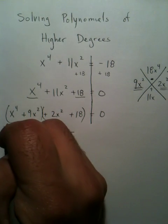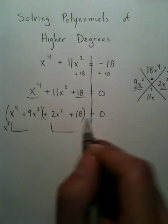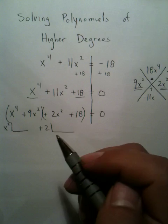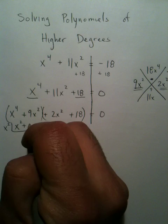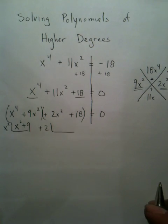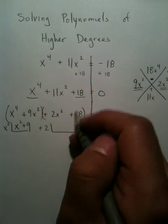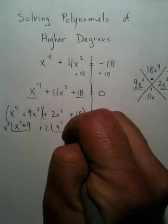Pull out an x², because that's what they have in common. Over here they have a positive 2. And then you would say, after simplifying, an x² plus 9. And after simplifying again, you're going to get an x² plus 9.